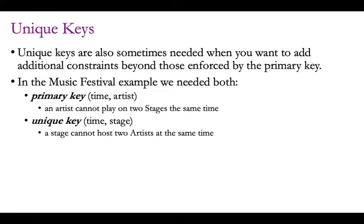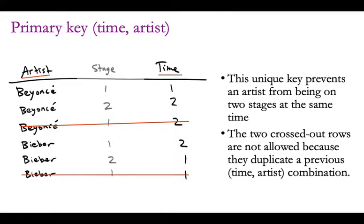In the music festival example from a couple of weeks ago, the primary key for performances was the time and artist combination — so an artist cannot play two stages at the same time. But there was an additional constraint: a stage cannot host two artists at the same time. You need a different constraint to enforce that. So you make a unique key with the combination of time and stage. Time and artist has to be unique, and time and stage has to be unique — they both operate simultaneously.